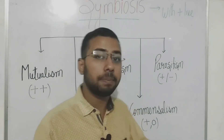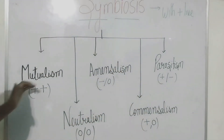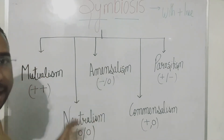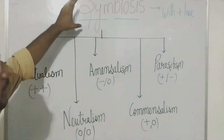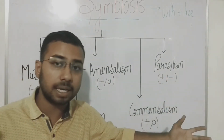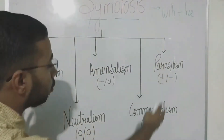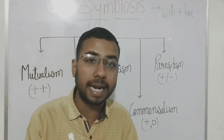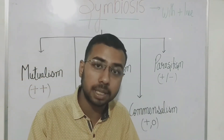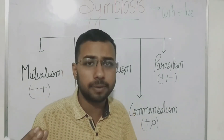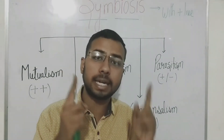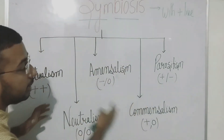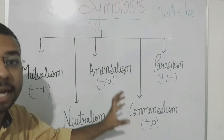The word Symbiosis simply refers to the interaction between two organisms. Now this interaction may be of different types, such as Mutualism, Amensalism, Parasitism, Neutralism, and Commensalism. There are different types of interactions. Symbiosis is a broader term that is classified into these different types of interactions, because in the word Symbiosis it is not defined whether an organism is harmed or benefited — it refers to two interacting species only.